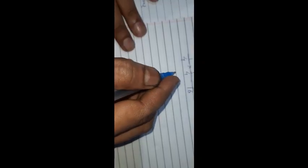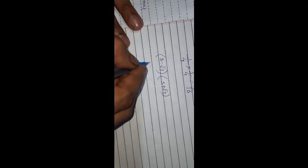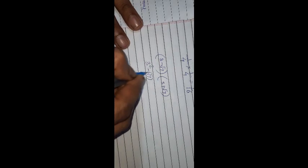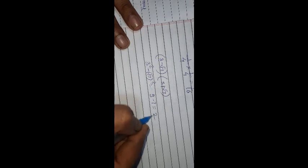Next question: is (3 − √7)(3 + √7) rational or irrational? Using (A − B)(A + B) = A² − B², we get 3² − (√7)² = 9 − 7 = 2. So that is a rational number.